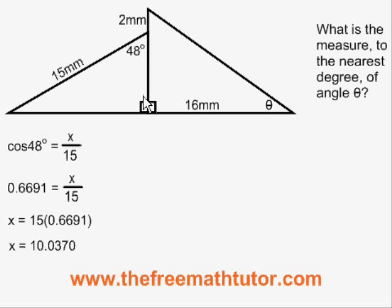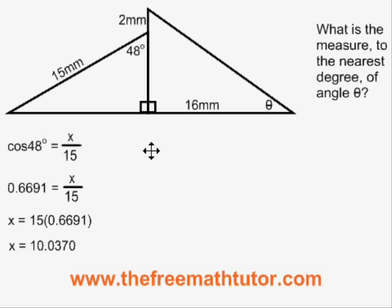That is not the same height as the upright side in the triangle on the right, because the triangles are different sizes. But we have been given the information that the difference between the two sides in the two triangles is 2 millimeters, so we just have to do a little addition: 10.0370 plus 2 is equal to 12.0370 millimeters, again rounded to four decimal places. Now we know the upright side of the triangle on the right.